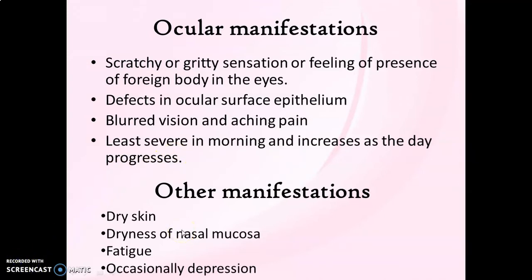The inflammatory process in Sjögren's syndrome also affects other tissues of the body. There is presence of dry skin, dryness of nasal mucosa, and along with it, fatigue and occasional depression are also manifested.